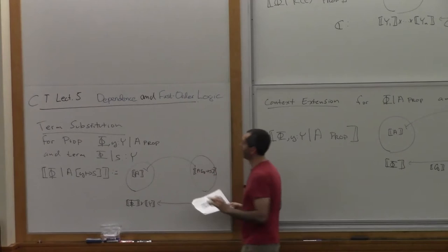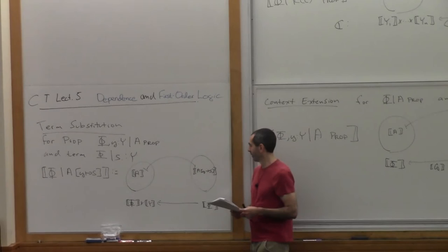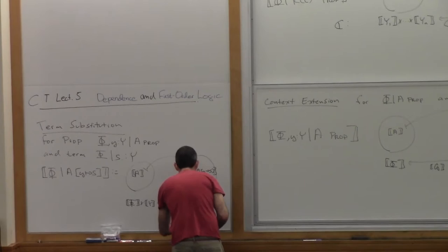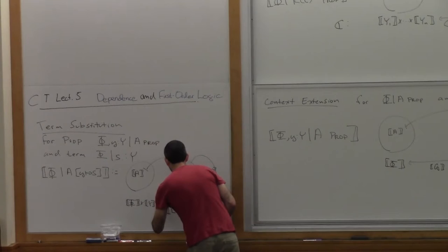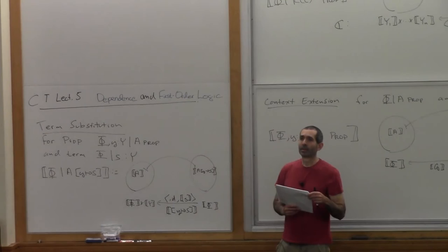A nullary relation — where the arity is the empty list — would be interpreted as a proposition over the terminal object, since the interpretation of the empty list is the terminal object. That's something that doesn't depend on any argument — it's just a proposition, not a proper predicate. Next we can have context extension: for a proposition A in context Phi and a variable y not in that context, we want to interpret A as a proposition in the extended context.